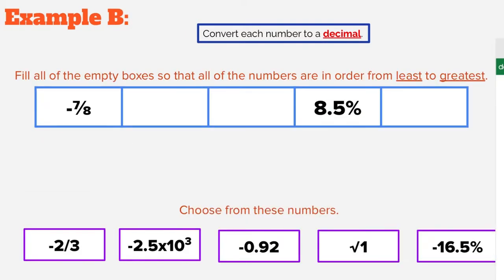Here we are at Example B. It says fill in all the empty boxes with numbers in order from least to greatest. Some numbers are already placed and we need to fill in the other three, choosing from five options at the bottom. First, we convert the numbers we're given: negative 7 eighths — divide the numerator by the denominator — gives us negative 0.875. Next, 8.5% moved two decimal places to the left gives us 0.085. We can also use the decimals calculator to confirm.